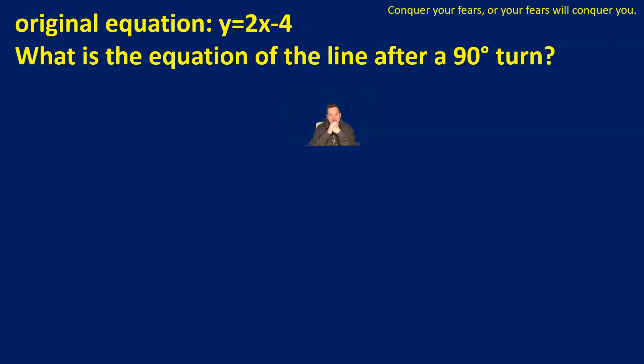Hello one and all and welcome. In this one we're going to take a look at the following question. We have an equation y equals 2x minus 4, and the question is: what is the equation of the line after a 90 degree turn?